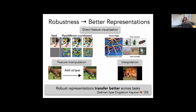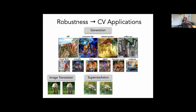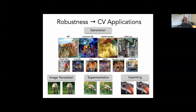With robust representations you can also do image translation, super resolution, and many other computer vision tasks more easily. A few lines of Python code can produce image generation results that would have been state-of-the-art a few years ago, before the engineering investment into GANs. Many things that now require heavy engineering in computer vision seem much easier once you use robust models.